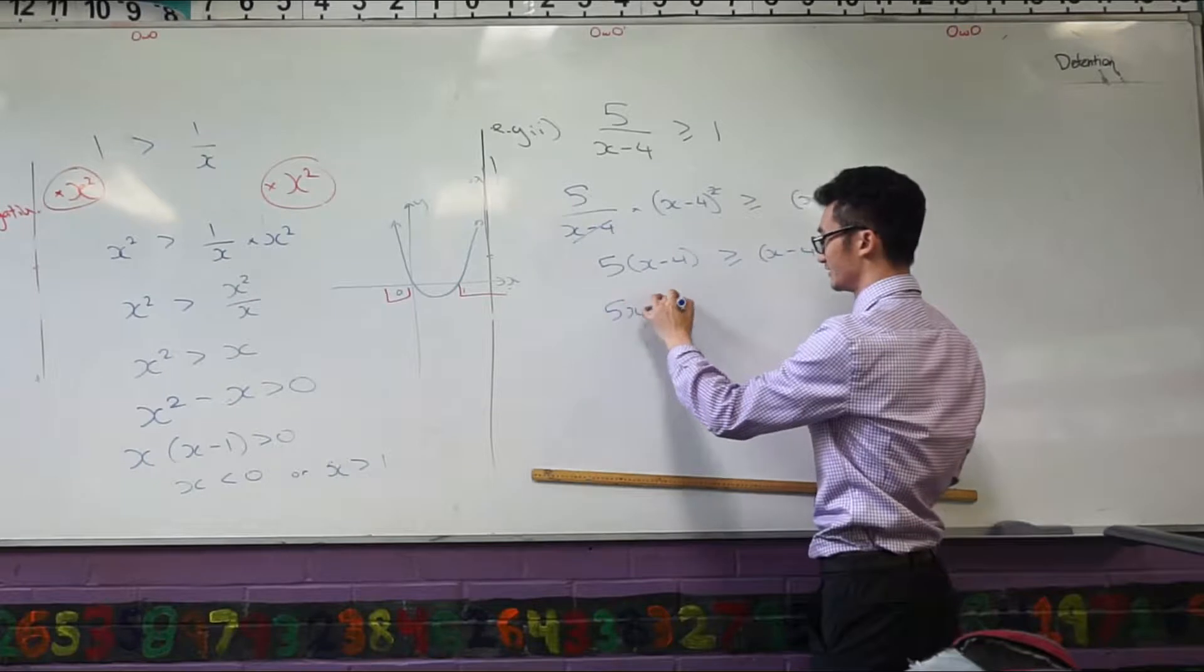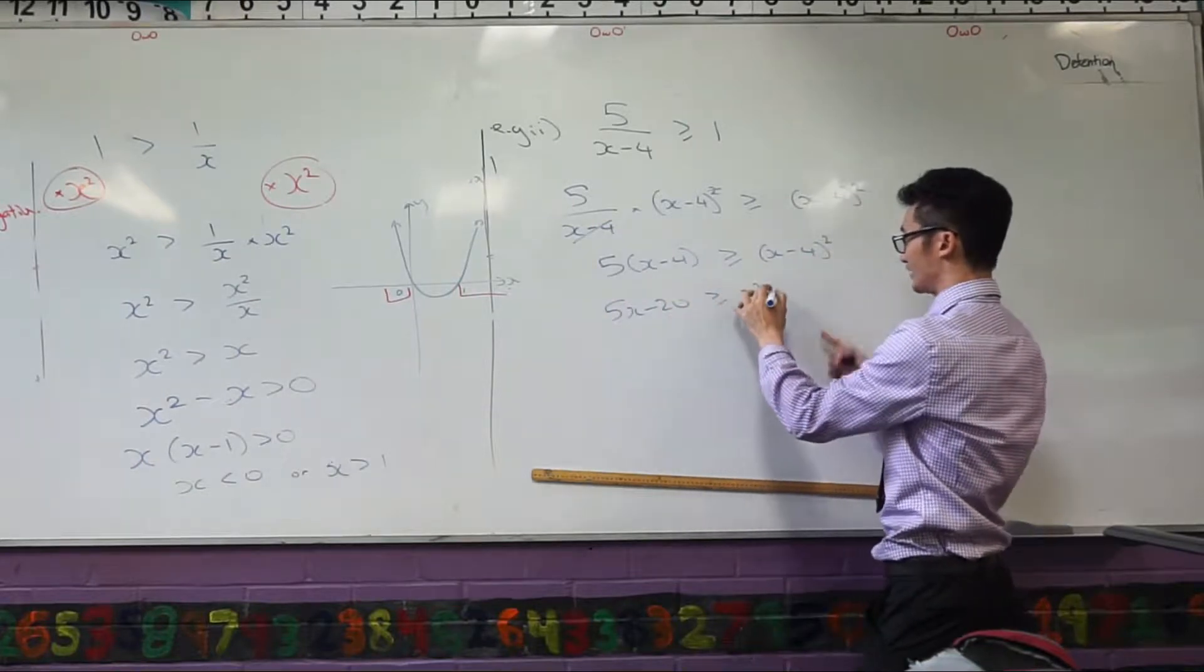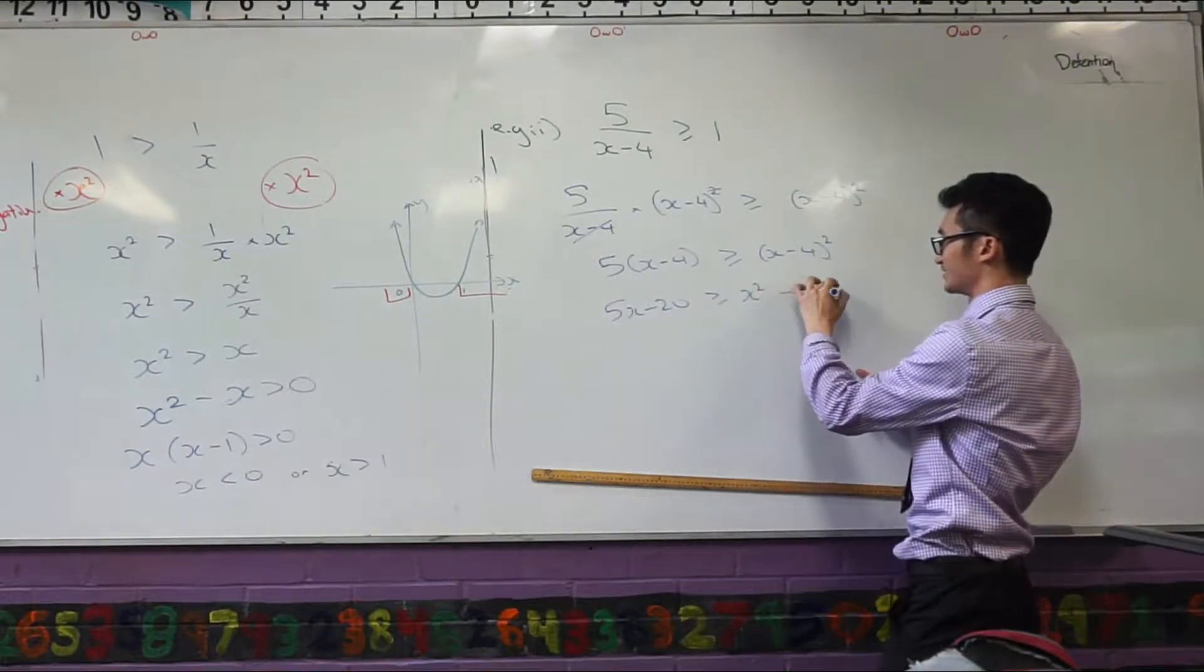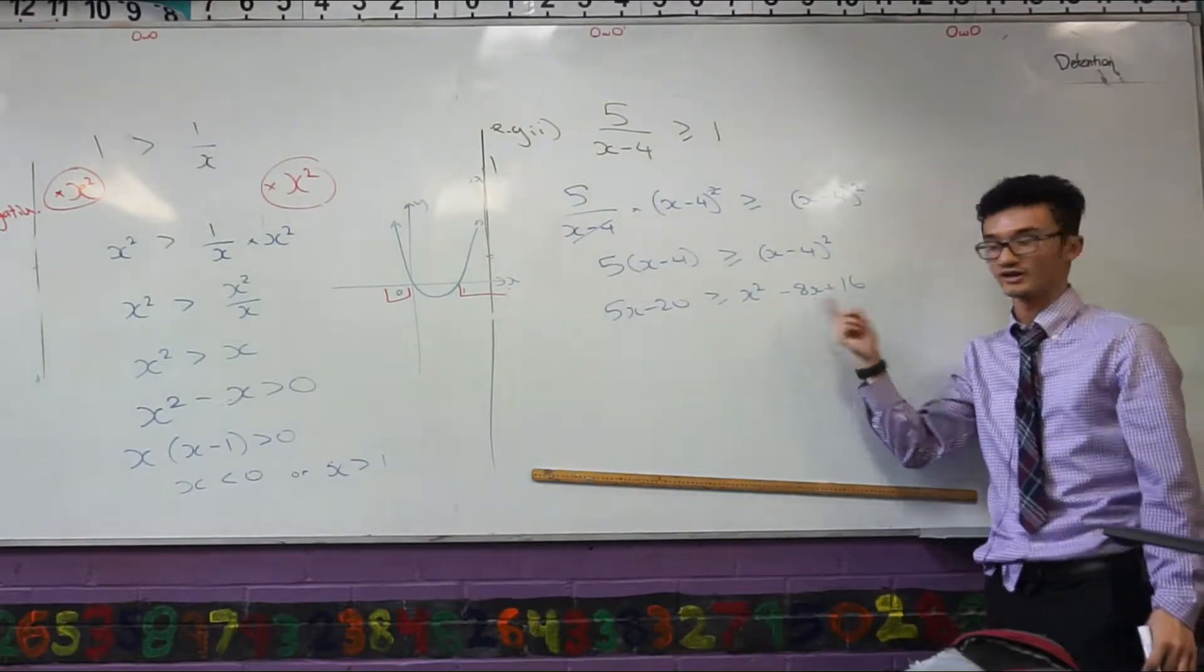What I'm going to do is I'm going to expand this out first. So I've got 5x minus 20 and x squared minus 8x plus 16. Hopefully that's not too bad because that's a perfect square. I can use my shortcuts there.